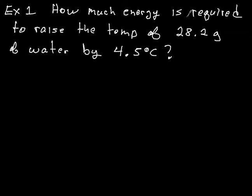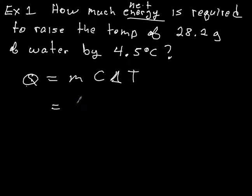So let's do this example. How much energy is required to raise the temperature of 28.2 grams of water by 4.5 degrees Celsius? And so let us look at the formula. Q equals MC delta T. So how much energy, how much heat, if you will, that's Q, is equal to mass. What's the mass of our water? Our mass is 28.2. So just write that here. 28.2 grams.